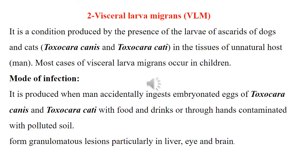Visceral larva migrans is a condition produced by the wandering of the larvae of Toxocara canis and Toxocara cati, from dogs and cats, in the tissues of an unnatural host — man. Most cases of visceral larva migrans occur in children. Infection occurs when man accidentally ingests the embryonated eggs of Toxocara canis and Toxocara cati with food and drinks, or through hands contaminated with polluted soil, forming granulomatous lesions particularly in the liver, eye, and brain.